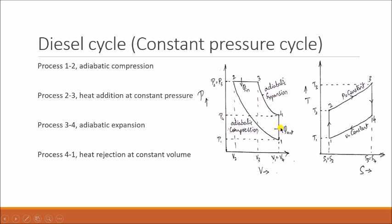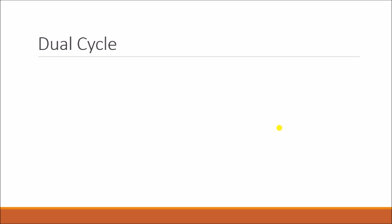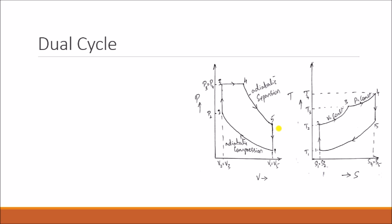Next we will go through the final type of cycle, which we call the dual cycle. This dual cycle is a combination of petrol cycle, that is Otto cycle, as well as diesel cycle. The heat is added partially at constant volume and partially at constant pressure. The same processes are explained using PV and TS diagrams. This cycle has five processes, whereas earlier we had four.